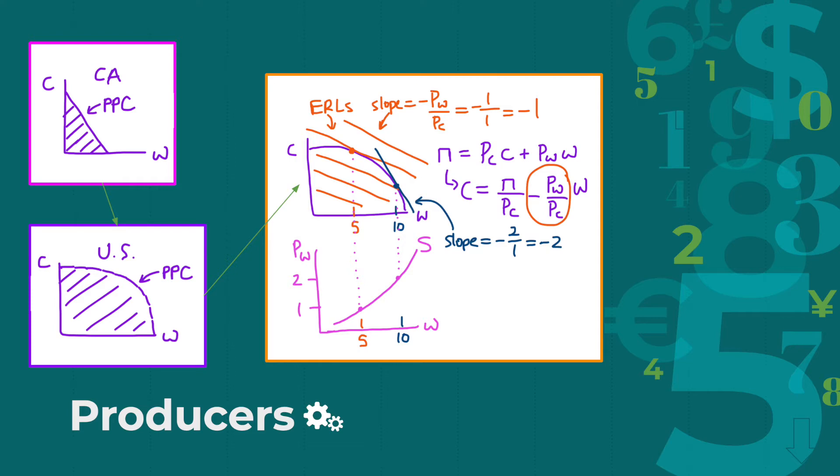Now, we can graph and connect two points on the supply curve, one where wheat is $1 and 5 units of wheat are produced, and another at $2 where 10 units of wheat are produced. This also happens when the price of corn decreases, since this changes the slope in a similar way. So, the supply curve really depends on the relative prices of corn and wheat, or the price ratio.